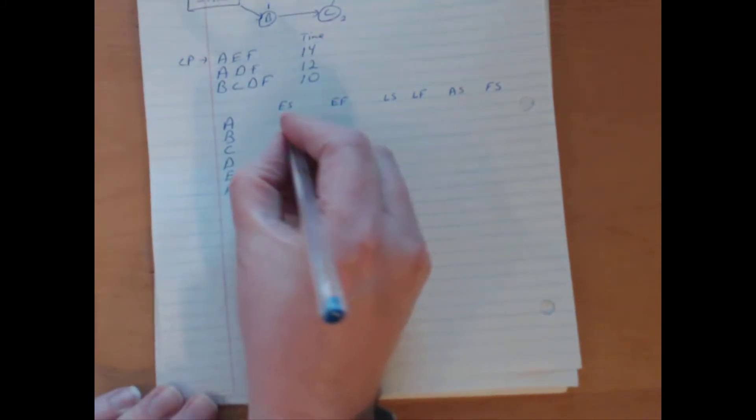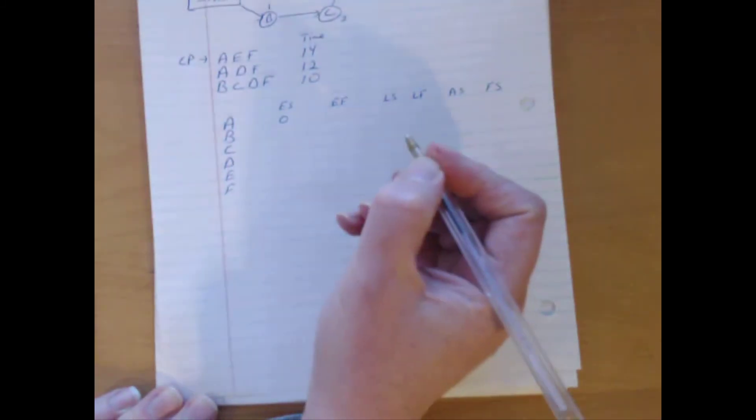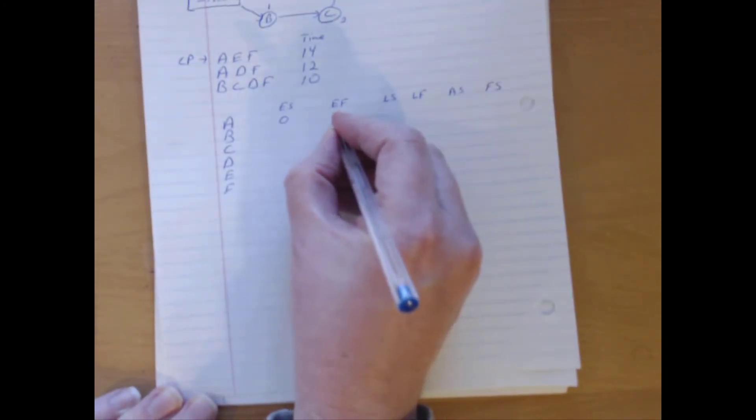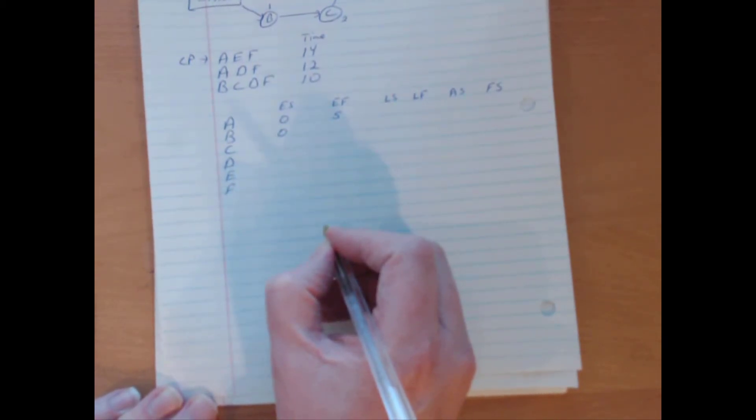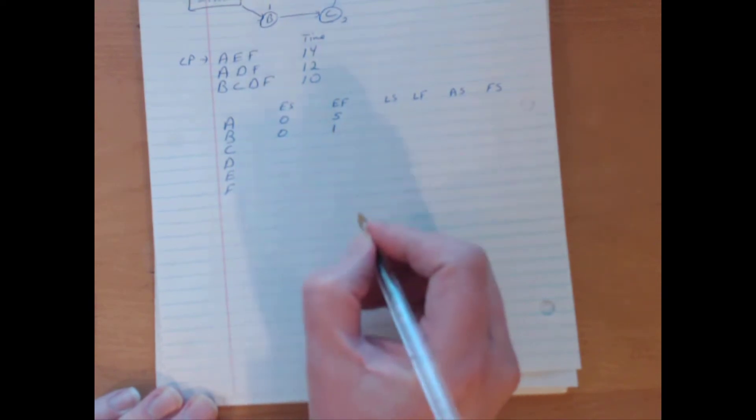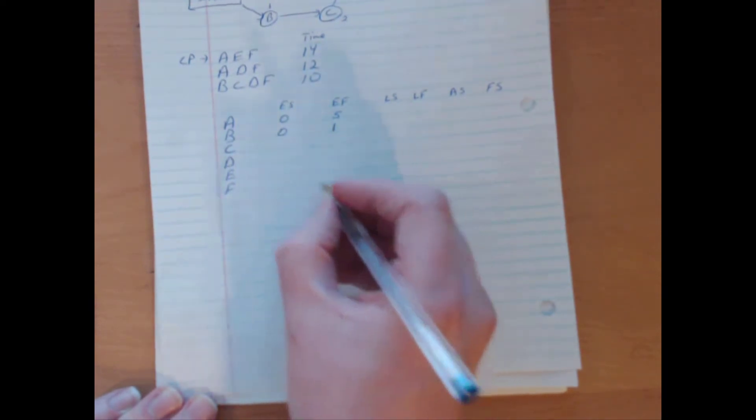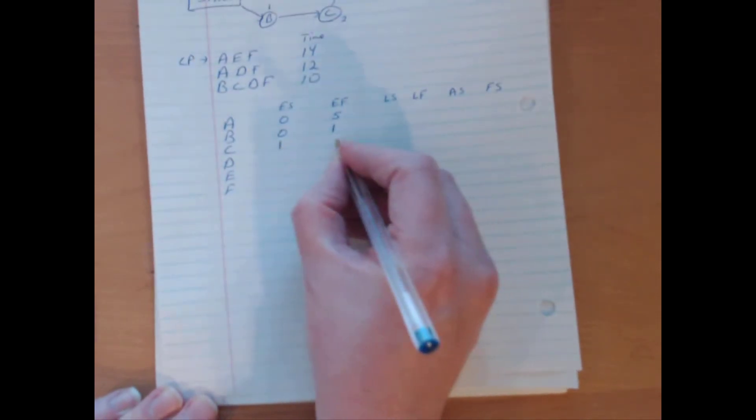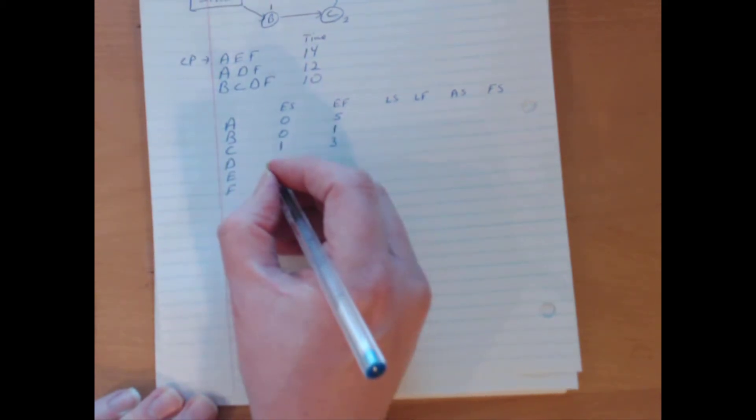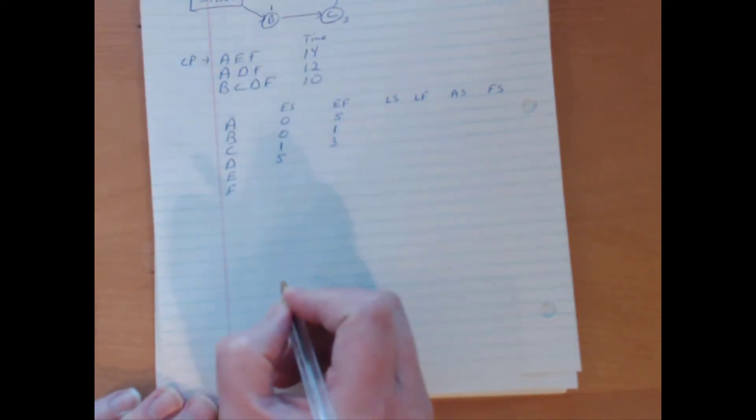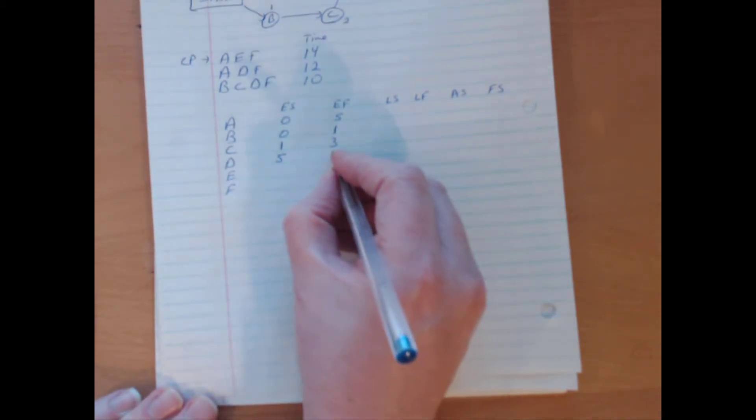So earliest start time for A, well A begins the process, so early start time for A is 0. It takes 5 months for A, so earliest finish time is 5. B also starts in period 0. So earliest start time is 0. And it finishes in period number 1. C begins when B finishes. So C can begin in period 1, takes 2 months, ends in period 3. D requires both C and A to be finished, the later of the 2. Which means that D cannot begin until period 5, when A is completed. And it takes 4 periods, so it takes until period 9, or month 9, and D is completed.